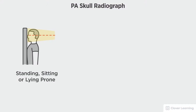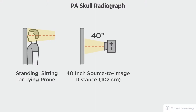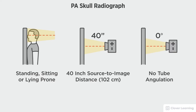In this view we will be demonstrating the PA skull. The PA skull should be performed with the patient standing or sitting at the upright bucky or lying prone on the table with a 40-inch source to image distance and no tube angulation.